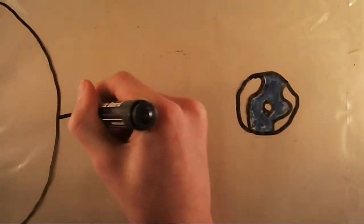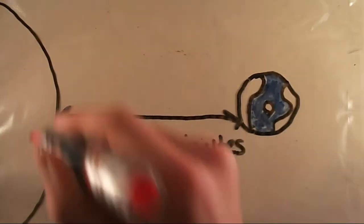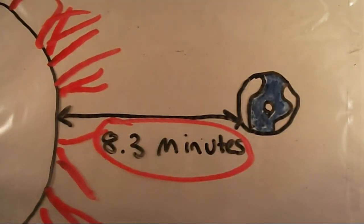This also happens with the sun. You're seeing the sun how it was 8.3 minutes ago, which means if the sun was to for some reason explode, the light from that explosion wouldn't reach us until 8.3 minutes after the explosion.